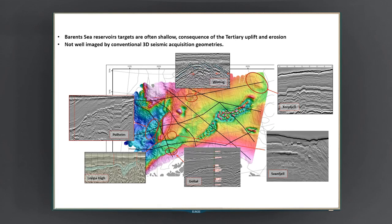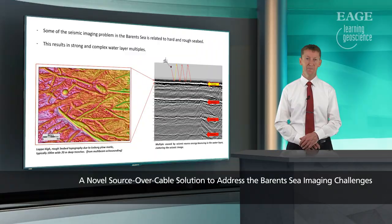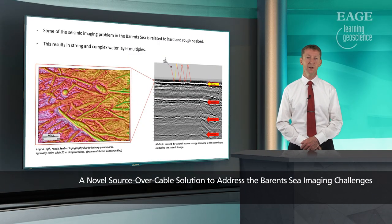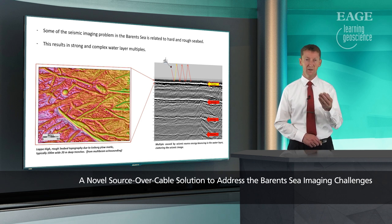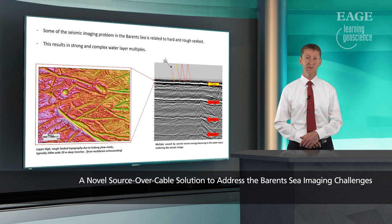Here you see seismic sections covering various areas where oil and gas has been discovered and prospects exist, with similar problems seen in several places across the Barents Sea, not just the Loppa area. We also have a particularly hard seafloor full of scour marks from icebergs, which sets up very large and difficult imaging problems in terms of multiple scattering.